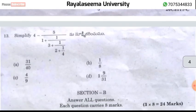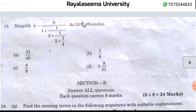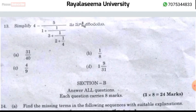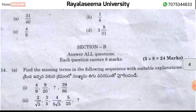Question number 13 is a simplification question: 2 + 1/4, solve to get the answer 9/8. Option B is the correct answer. That completes the 13 multiple choice questions worth 2 marks each, totaling 26 marks.